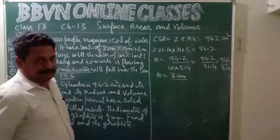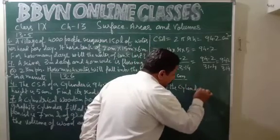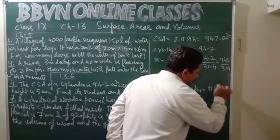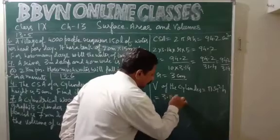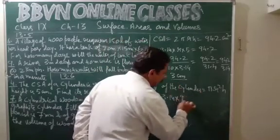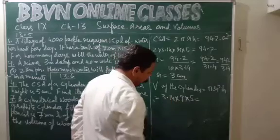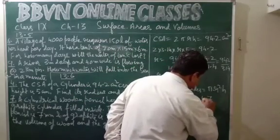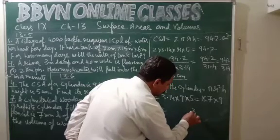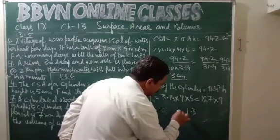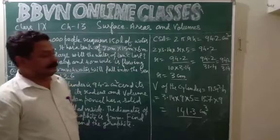Now we need to find the volume of the cylinder. Volume of a right circular cylinder is pi r square h. So pi is 3.14 into r square — r square becomes 9 — into h, which is 5. So 5 multiplied by 3.14 gives 15.7, multiplied by 9 gives 141.3 centimeter cube. This is the volume of the cylinder.